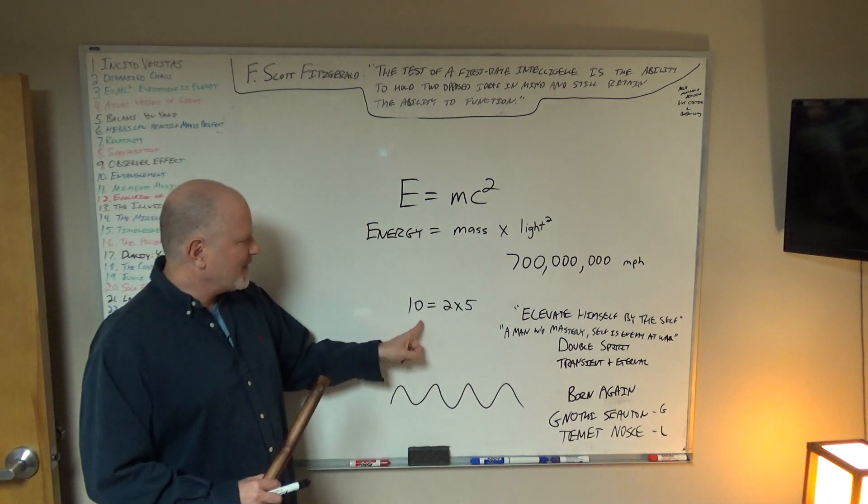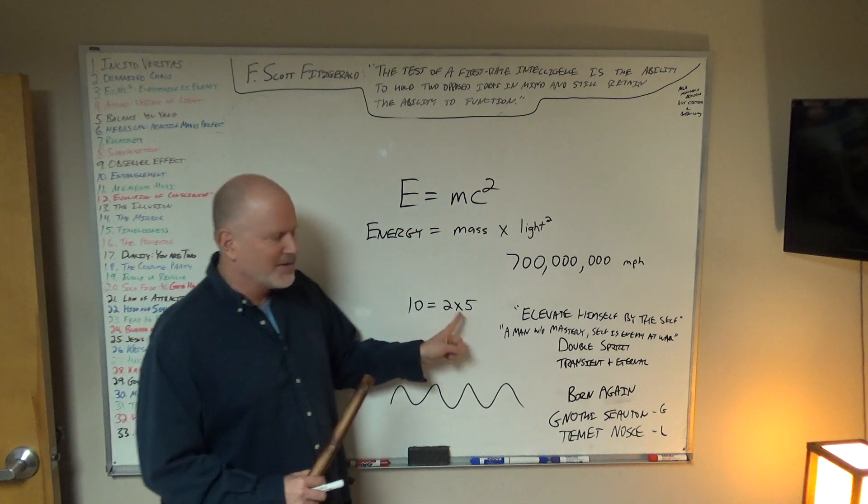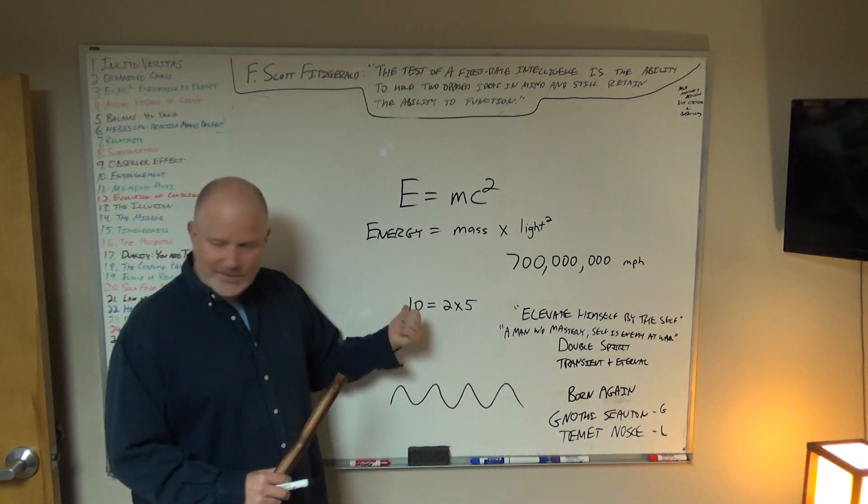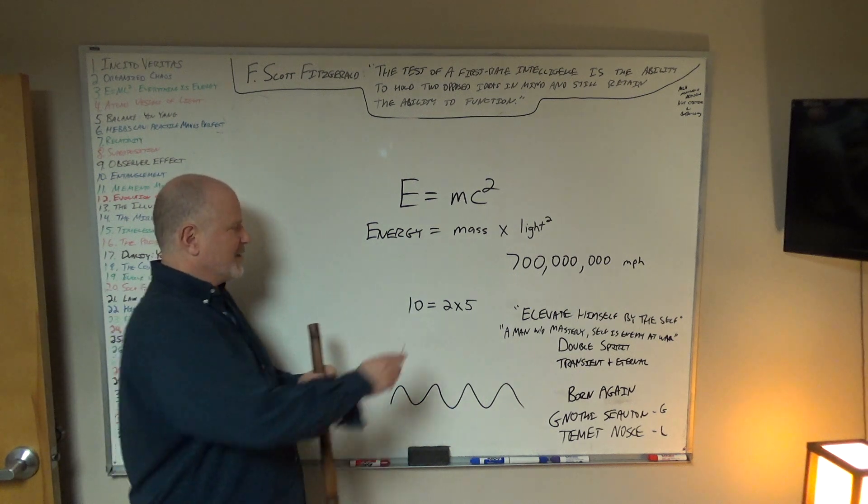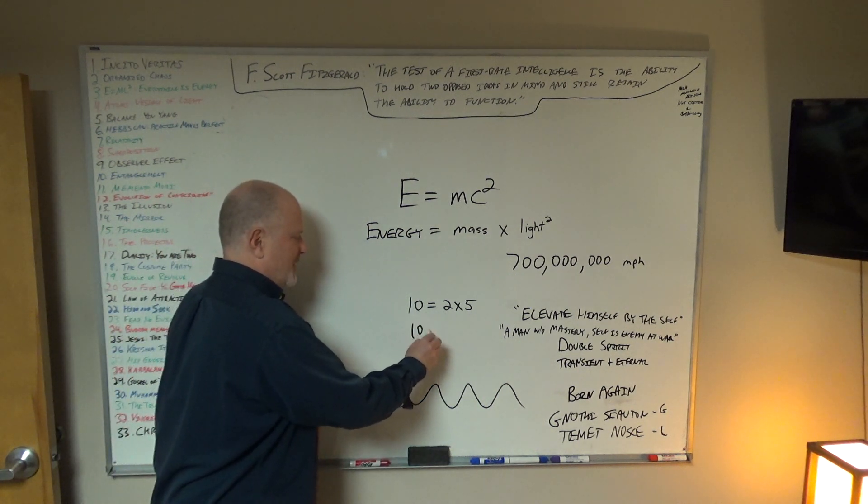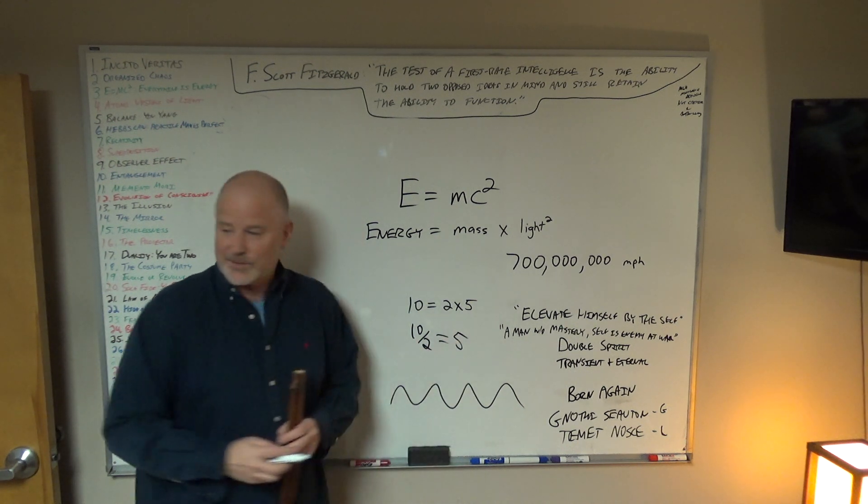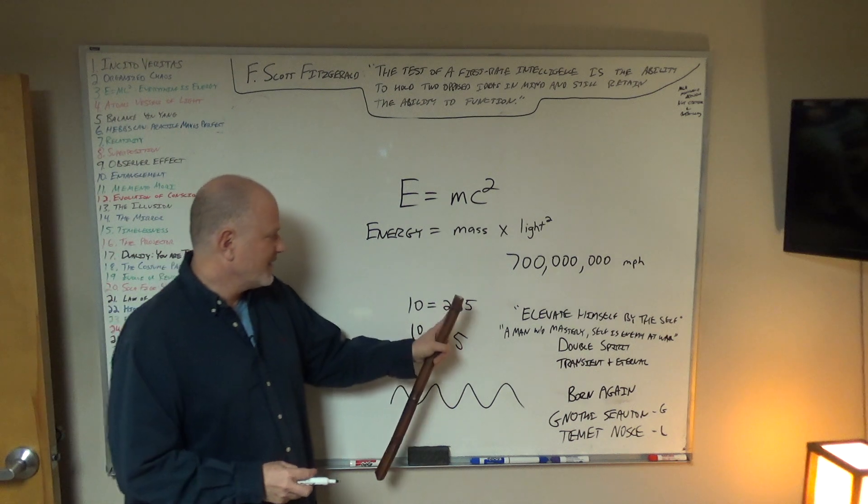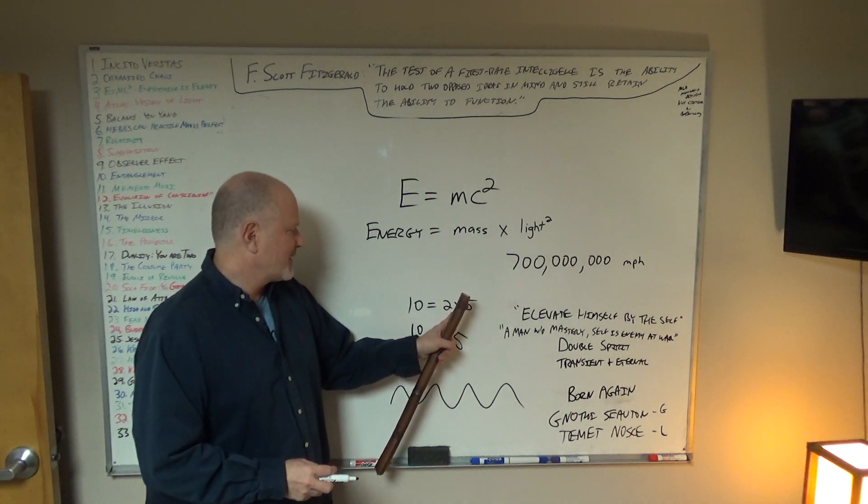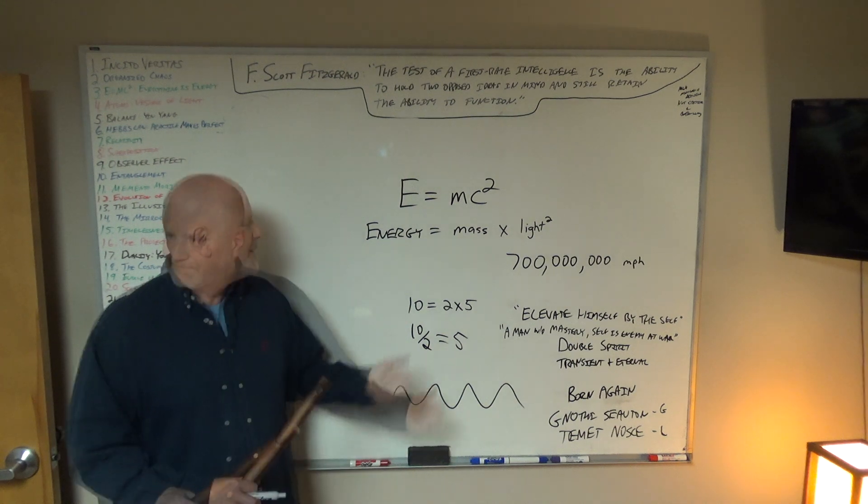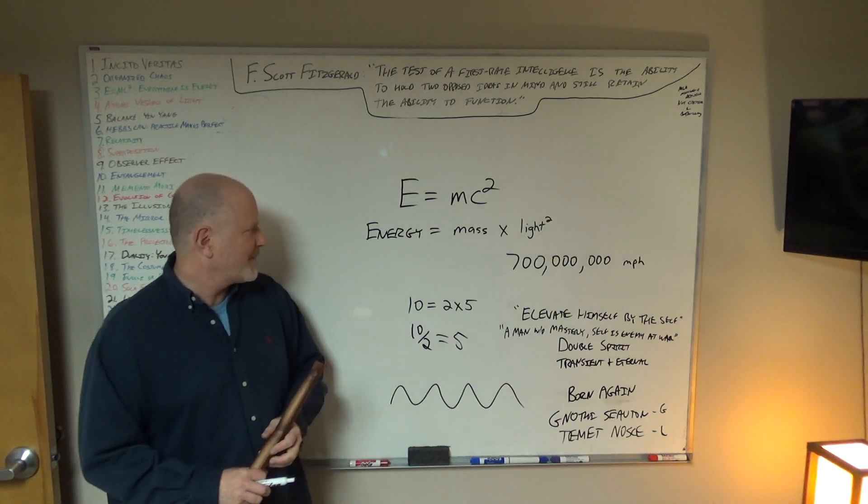So let's just look at math, a normal math equation, 10 equals 2 times 5. This is true. What can I do to this equation and still keep it true? If I took the 2 and I put it underneath the 10, 10 divided by 2 equals 5. That is still true. I took one part from this side and I put it under this side. I divided it and I still have the same equation, a little bit different form, but it's still the same equation.